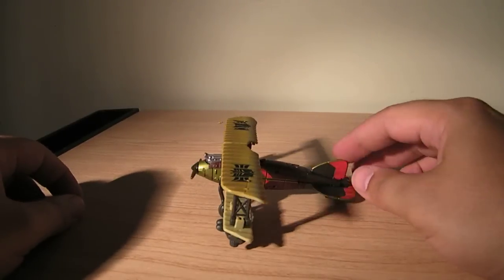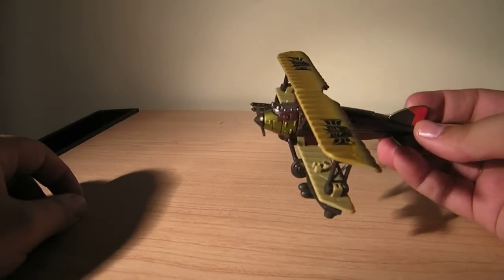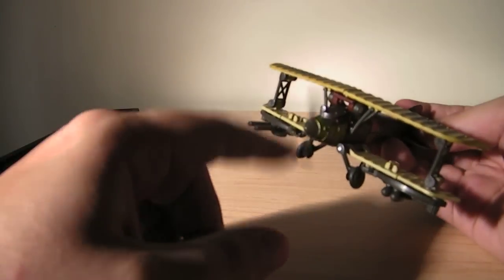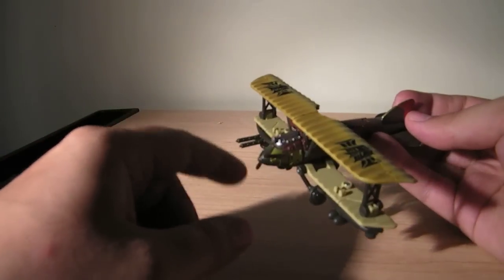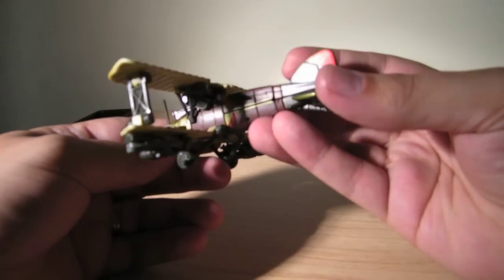Here's a video review for Revenge of the Fallen Scout Class Ransack. As you can see, he's an old World War I biplane. Maybe World War II, although it looks more World War I to me.